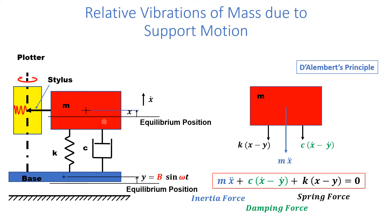In the relative vibrations setup, there is a plotter attached to the base and a stylus attached to the mass. As the mass vibrates, it gives a plot on the plotter. This vibration plotter shows the relative movement of mass M with respect to the base.